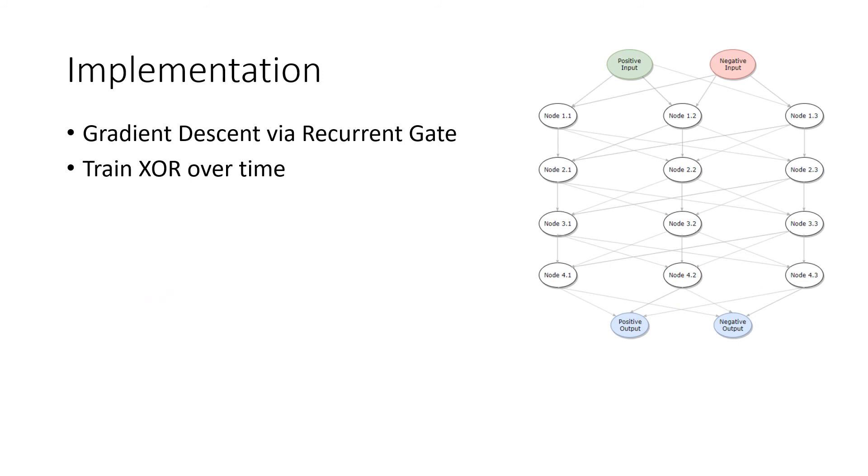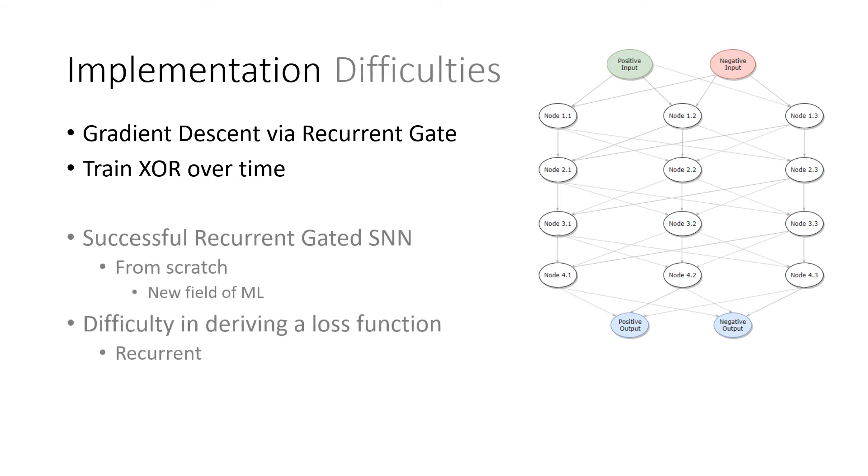So I tried to implement a gradient descent function via recurrent gate function. Recurrent, meaning that the last hidden layer fed back into the first hidden layer for all of these nodes and gate function. So it was based on the second paper. We were trying to train an XOR over time, XOR function.